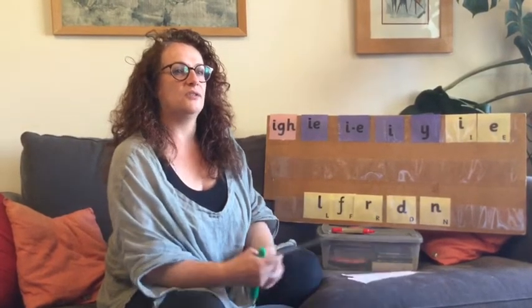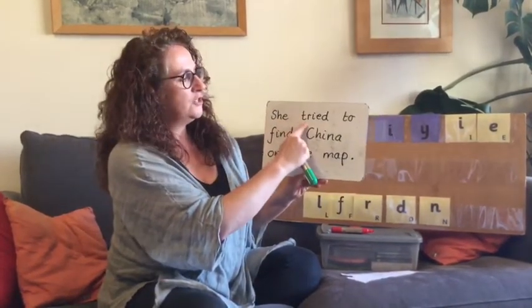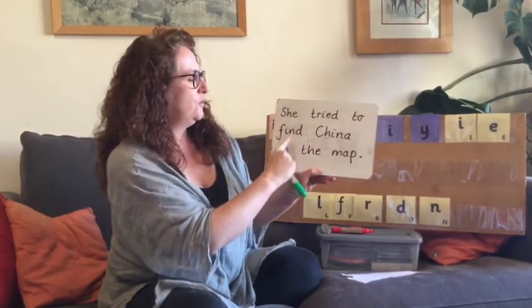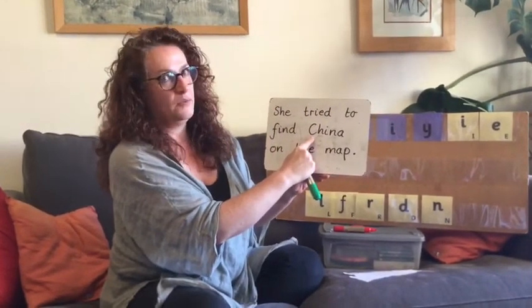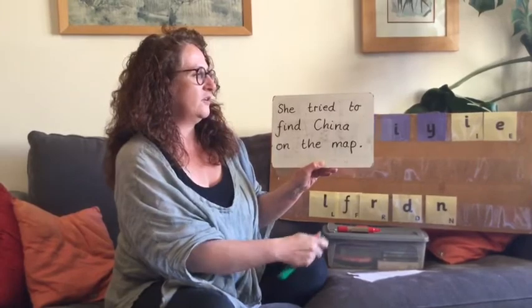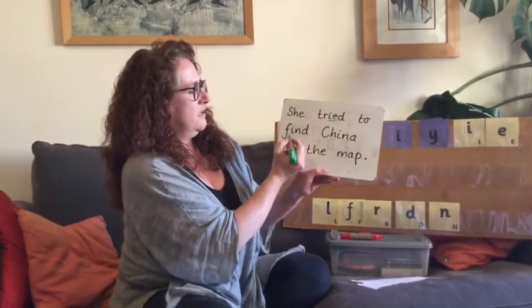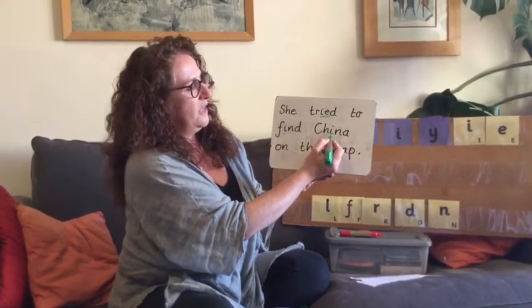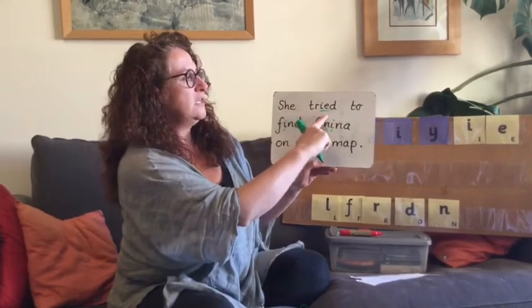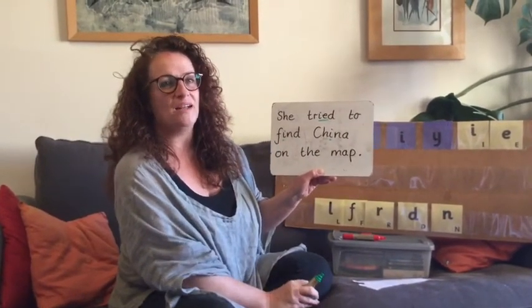And then the last part of our sentence is 'on the map'. Don't forget the end of your sentence. Let's have a look together. So 'she' with a capital S — she tried to find China with a capital C — China on the map. And let's have a look if we can find our I sounds in there. We've got the I sound there, the I on its own there, and the I on its own there. She tried to find China on the map. Okay, well done. See you soon. Bye!